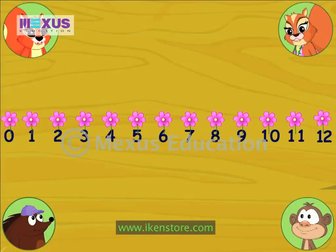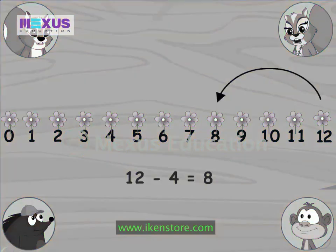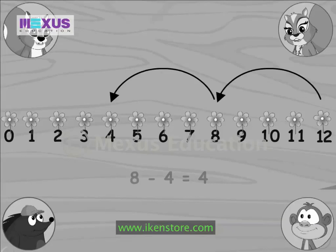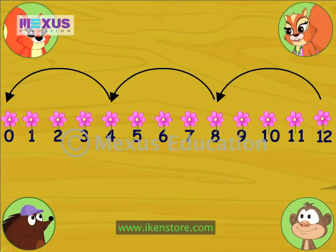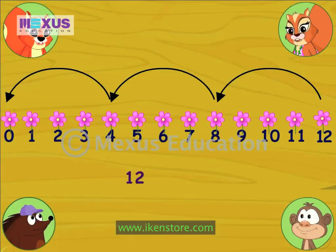Now watch how to subtract four at a time. How many times did I subtract four? Three times. That's correct, Amber. That means twelve divided by four is three.